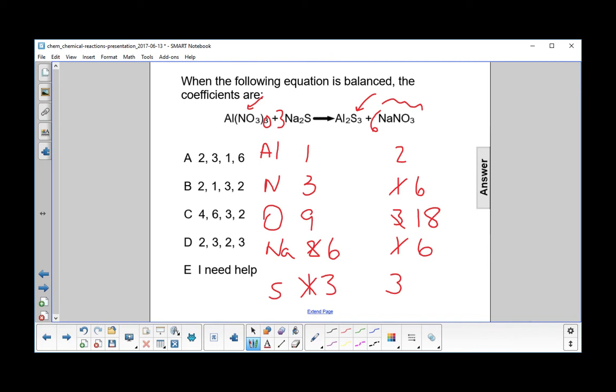And now let's go to aluminum. We have two aluminums on the right side, on the products, and only one on the left. So let's go ahead and multiply that by two and see what that gets us. Okay, so we have two aluminums on the left side.